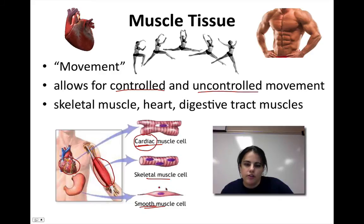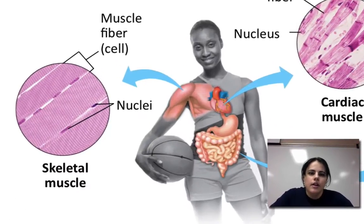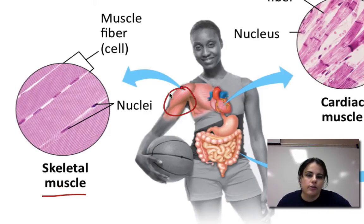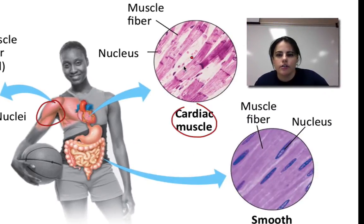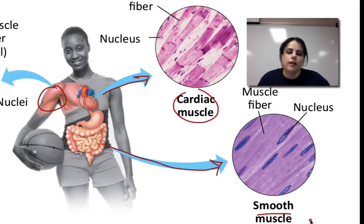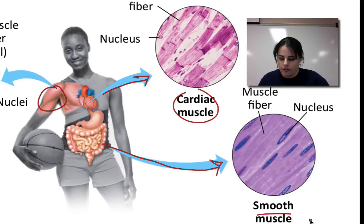Here they are under a microscope. Here is the skeletal muscle you would find in your normal muscles of the body. Then we have cardiac muscle tissue that's able to contract, relax, and pump blood. And then in our organs, particularly the digestive system, we have smooth muscle that allows muscular contractions to move food from one end to the other end of your digestive system.